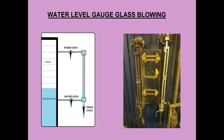Blowing procedure of water level gauge glass. The figure shows a gauge glass directly attached to the boiler shell. First close the steam and water cocks, then open the drain. If the steam and water cocks are holding, nothing should blow out from the drain cock. Now open and close the water cock to check the water line is clear from any obstruction. In the same way, open and close the steam cock to check the steam path is clear. Once confirmed both steam and water paths are clear, close the drain.